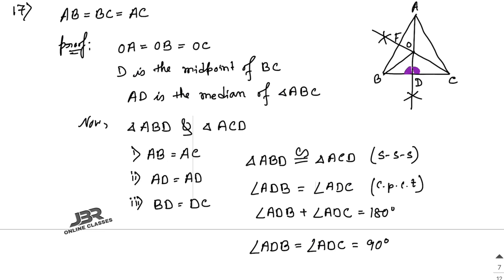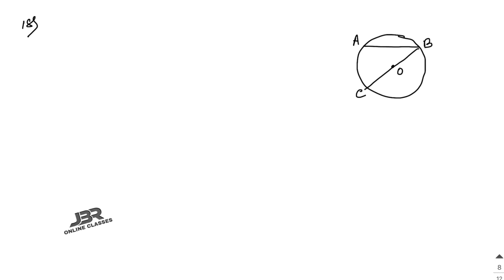Sum number 18, part one: draw a circle with center O. BC is the diameter, and AB is a chord. Join OD and AC. Given: OD is perpendicular to chord AB of a circle with center O, and BC is a diameter. We need to show that CA equals 2·OD.